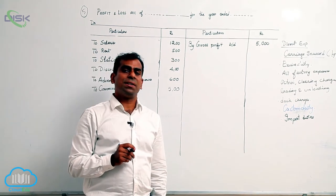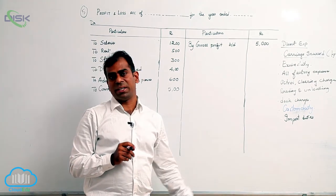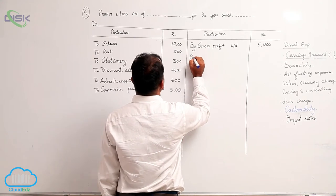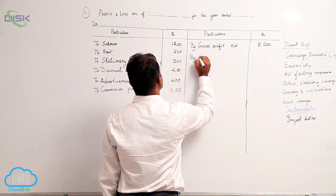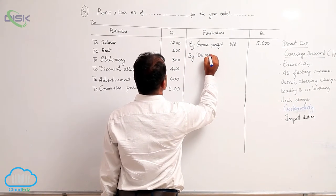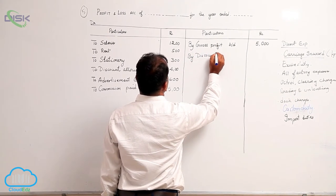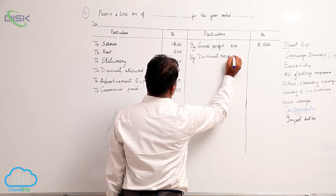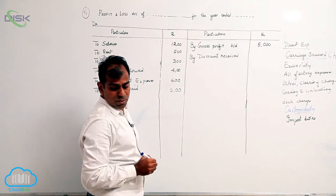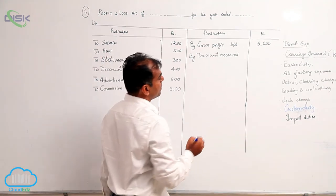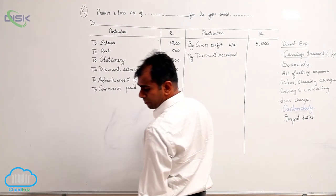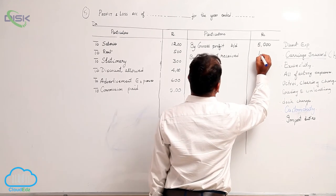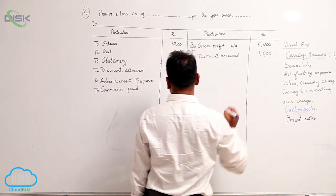Moving on to the next item, we have discount received. Anything received falls under the category of income, so incomes have to be credited. By discount received, amount being rupees one thousand.